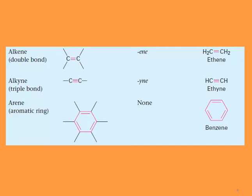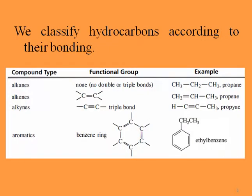So we classify hydrocarbons according to their bonding. Single bond: alkanes. Double bond: alkenes. Triple bond: alkynes. And aromatic: benzene ring, sometimes called the phenyl ring. Examples include propane, propene, and propyne, and here we also have ethylbenzene.